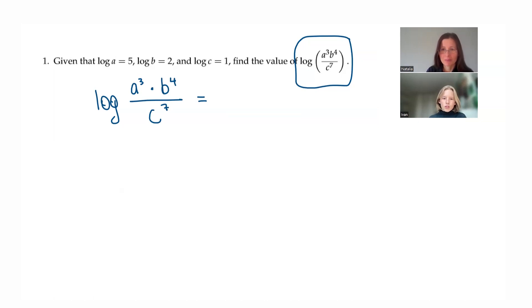So I see three terms. Let's use the sum and quotient rule first. So the quotient rule would give us... Let's do the quotient first. This is the whole something, and this is the whole something. Yeah, then it will have log A cubed times B to the fourth minus log C to the seventh.